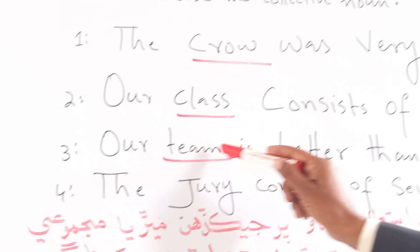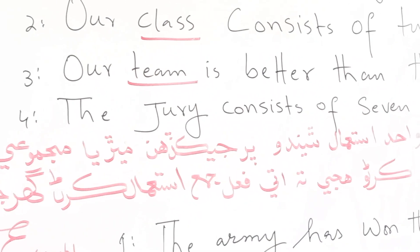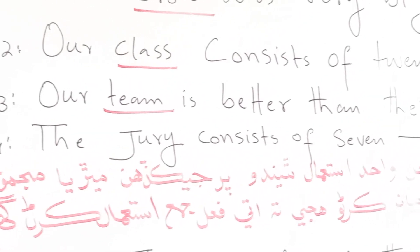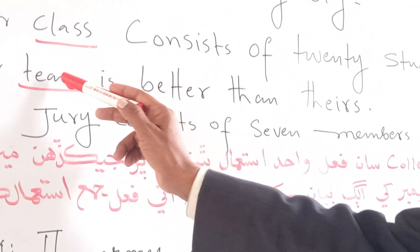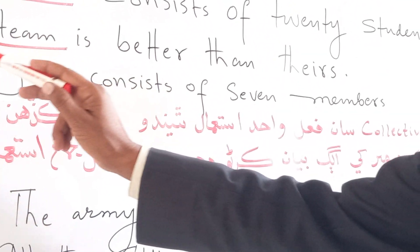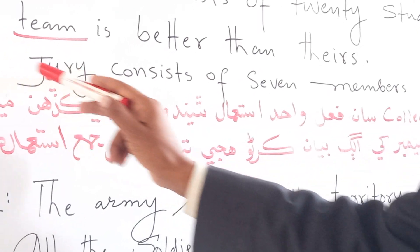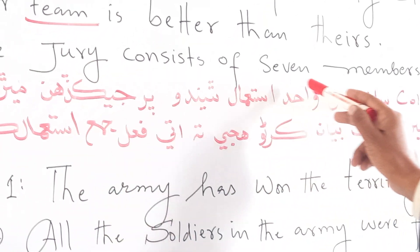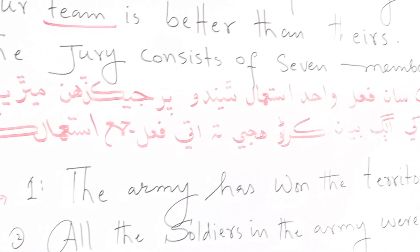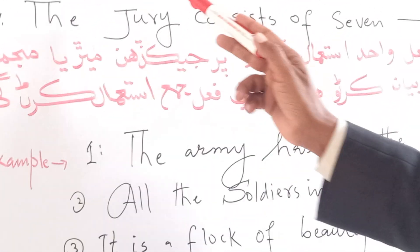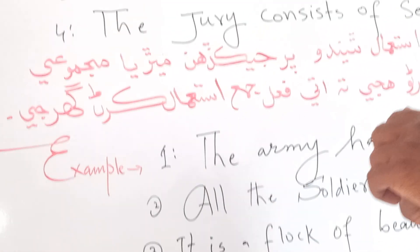More examples of collective nouns: 'Our team is better than theirs.' And: 'The jury consists of 7 members.' Here 'team' and 'jury' are collective nouns.